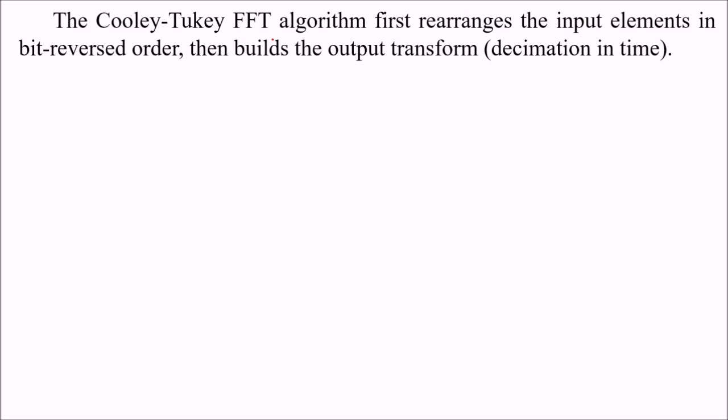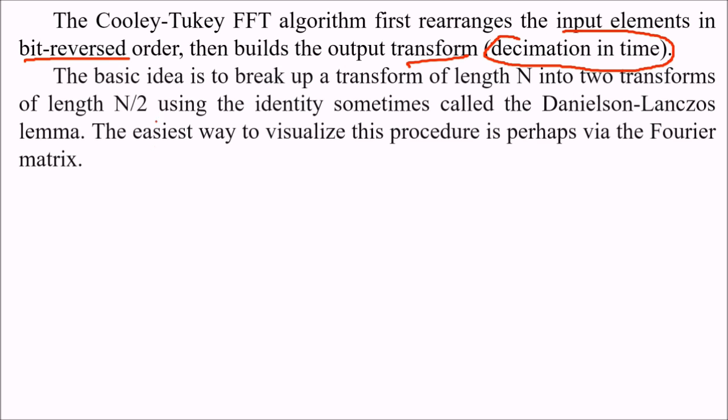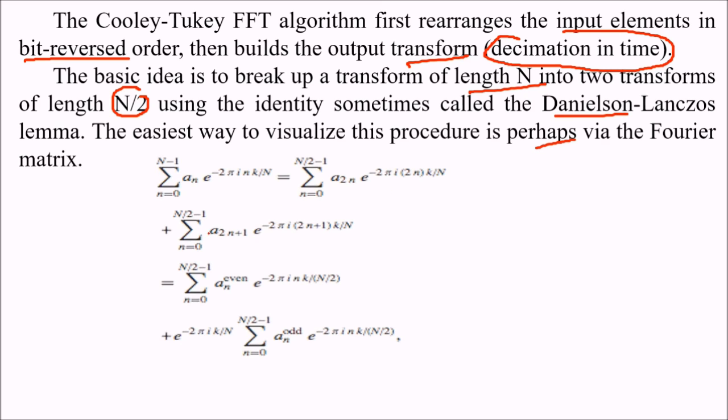The Cooley-Tukey FFT algorithm first rearranges the input elements in bit-reversed order, then builds the output transform (decimation in time). The basic idea is to break up the algorithm of length n into two transforms of length n/2, using the identity sometimes called the Danielson-Lanczos lemma. The easiest way to visualize the procedure is perhaps via the Fourier matrix.